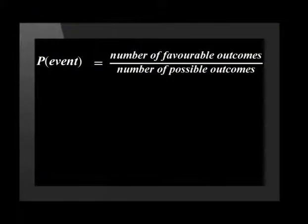To calculate the probability of an event when the outcomes are equally likely to occur, we divide the number of favourable outcomes by the number of possible outcomes. So the probability of getting a head is equal to 1 divided by 2, as there is only one favourable outcome out of two possible outcomes.